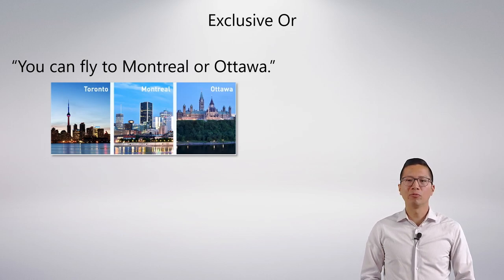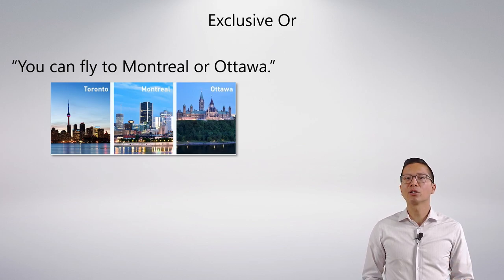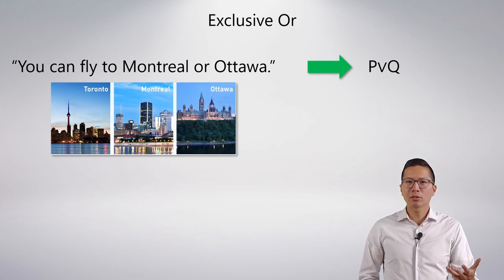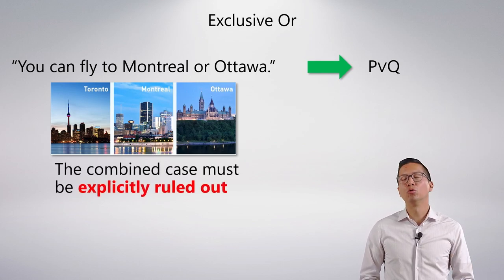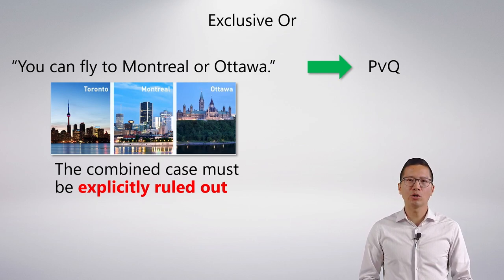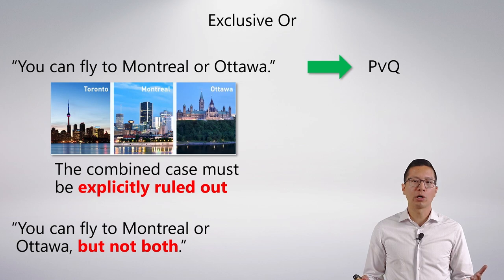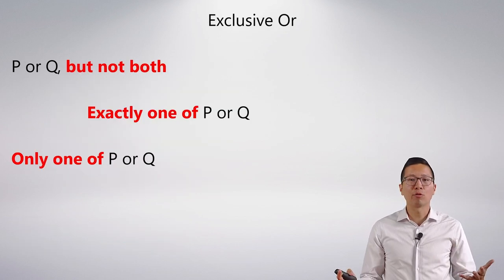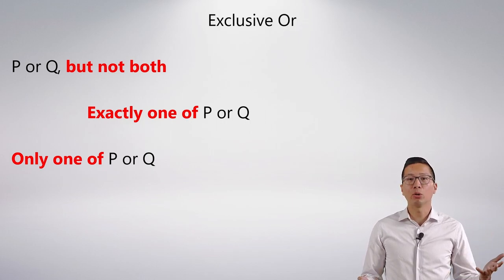The last one we're going to look at is the exclusive or example. Now, how do I symbolize? You can fly to Montreal or Ottawa. I hope you all realize the correct symbolization of this is just P or Q. Because remember, or is inclusive always in this course. So how do I make this exclusive or? I actually need to explicitly rule out the combined case in my English statement. That's the only way that I can genuinely make this an exclusive or claim. So I would have to say something like you can fly to Montreal or Ottawa, but not both. And that's really what exclusive or is getting at, but not both.